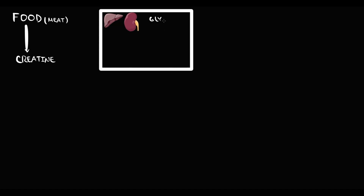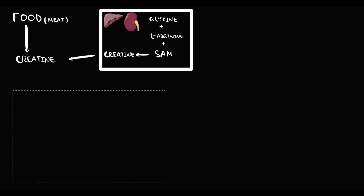Liver and kidneys combine glycine, L-arginine, and S-adenosyl methionine, and the result is creatine. Then creatine comes into our blood, where it serves as our muscle energizer.